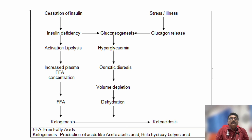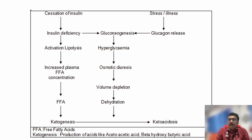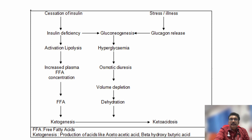In the pathophysiology: stress or stoppage of insulin leads to insulin deficiency and glucagon release, then gluconeogenesis, hyperglycemia, osmotic diuresis, and volume depletion and dehydration. On the other side, activation of lipolysis increases free fatty acid concentration, producing ketone bodies leading to ketoacidosis. The severe dehydration can cause hypovolemia and decreased circulation to internal organs, which can also produce lactic acidosis.